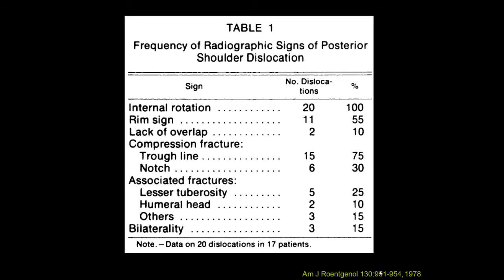A classic article from AJR describing the radiographic signs of posterior shoulder dislocation found that having the patient unable to externally rotate the arm — stuck in internal rotation — was seen in all of their examples. Other signs include the rim sign, where there is apparent widening of the joint space on the AP projection, usually over six millimeters. You can also look for the trough line, which represents the compression fracture of the glenoid on the humeral head — specifically an anteromedial fracture of the humeral head.